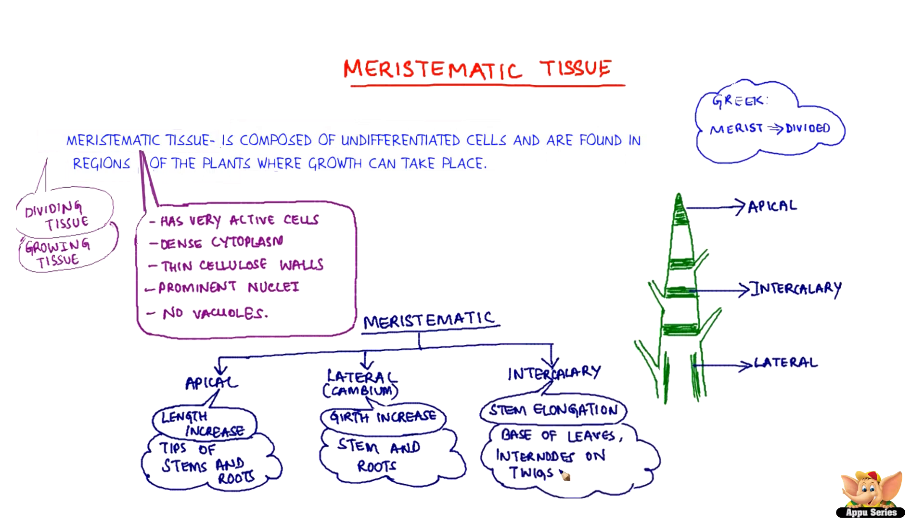Intercalary meristem is for stem elongation, situated at the base of leaves and internodes of twigs. As meristematic tissue matures, it becomes differentiated as components of other tissues.